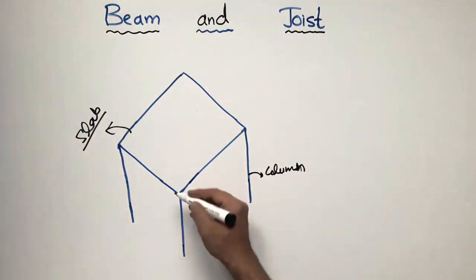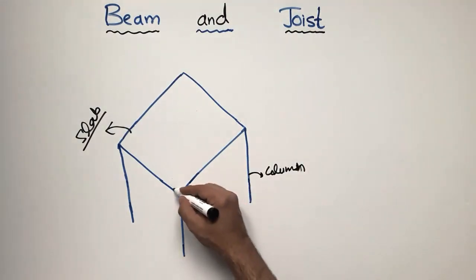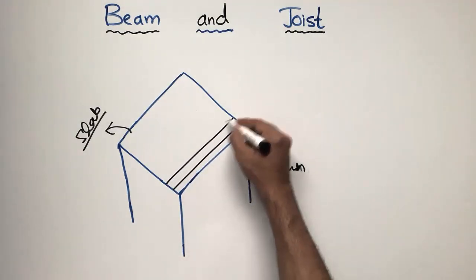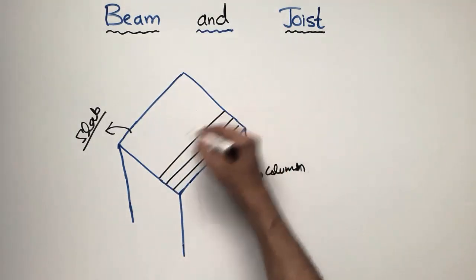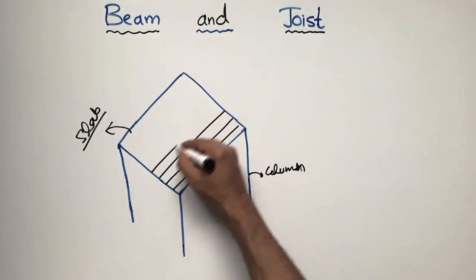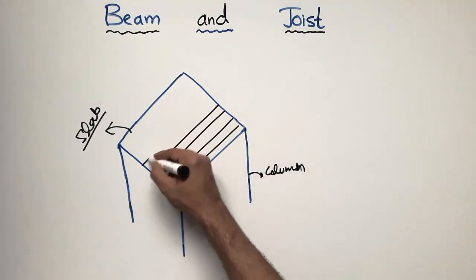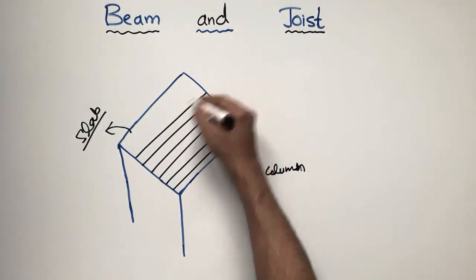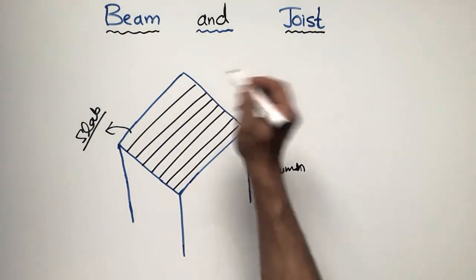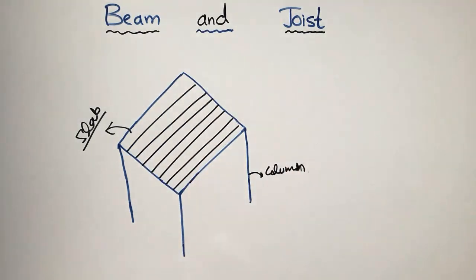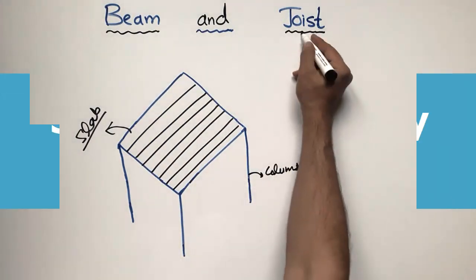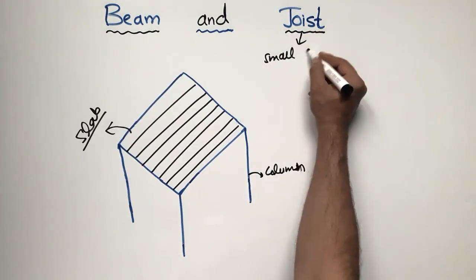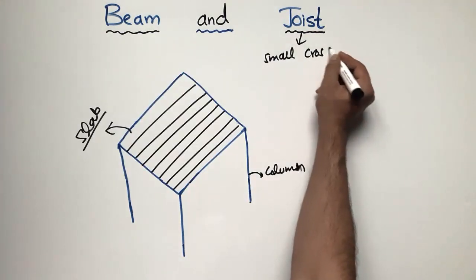The joists are provided throughout the length of the slab. These are called joists — horizontal members like beams. They are exactly the same as beams in purpose, but the only difference is that their cross-section is small compared to the beam.